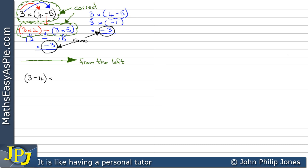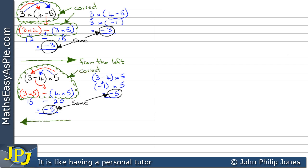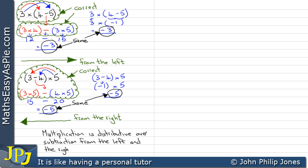Let's look at another example. Here I've got 3 minus 4 multiplied by 5. In blue the answer is minus 1 times 5 which gives us minus 5. Now I'm going to take the 3 and multiply it by the 5, bring down that minus, and then the 5 multiplies the 4. That gives me 15 and that gives me 20, so we have minus 5. These are the same. We've done this from the right. So multiplication is distributive over subtraction from the left and the right.